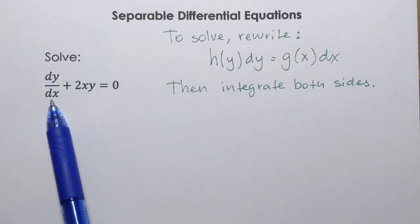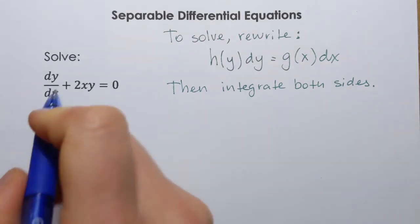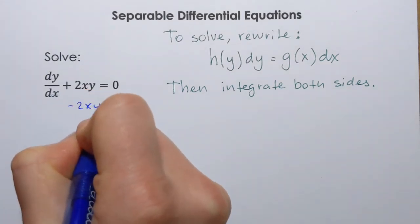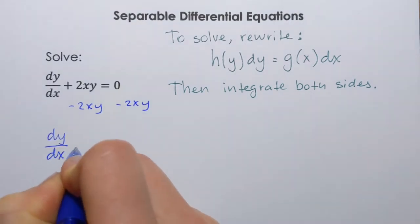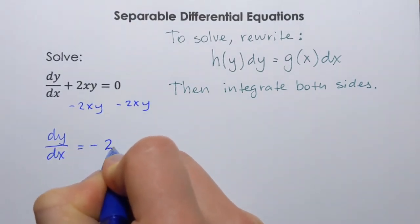I'm going to start by isolating dy/dx. So, for that I will have to subtract 2xy from both sides. dy/dx equals negative 2xy.